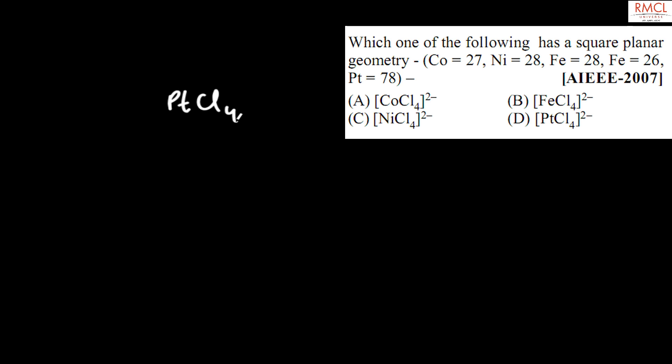The given question, asked in an IEEE 2007 exam, is: which one of the following has a square planar geometry? [PtCl₄]²⁻ has a square planar geometry.